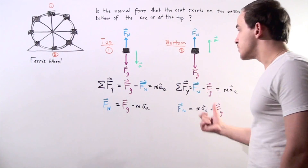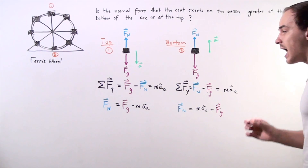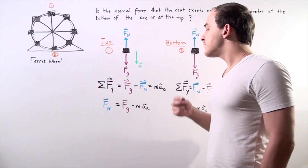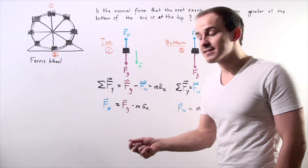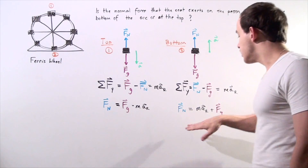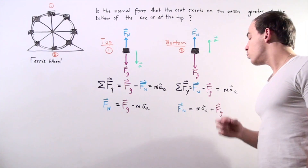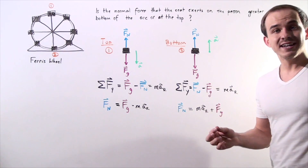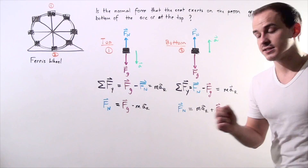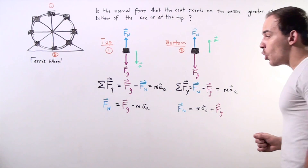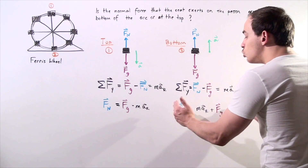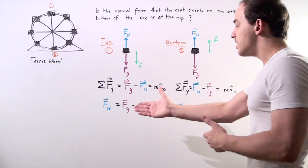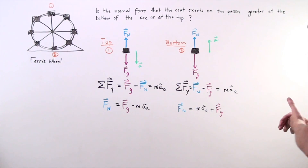Rearranging both equations and solving for the normal force: at the top, the normal force equals the gravitational force minus m times the acceleration. At the bottom, the normal force equals mass times the radial acceleration plus the gravitational force. We can see that at the bottom of the arc the normal force is greater than at the top, and plugging in numbers confirms this.